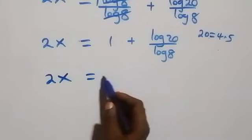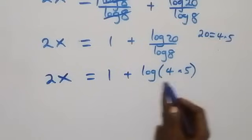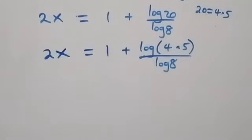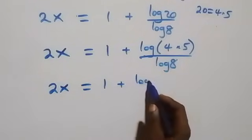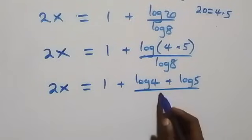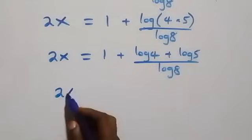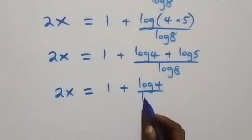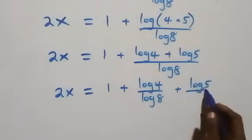Then what we have becomes 2x equals to 1 plus log of 4 times 5, over log 8. Then applying the law of logarithm again, from here we have 2x equals to 1 plus log 4 plus log 5, over log 8. And also we separate this into two fractions and we have 2x equals to 1 plus log 4 over log 8, then plus log 5 over log 8.